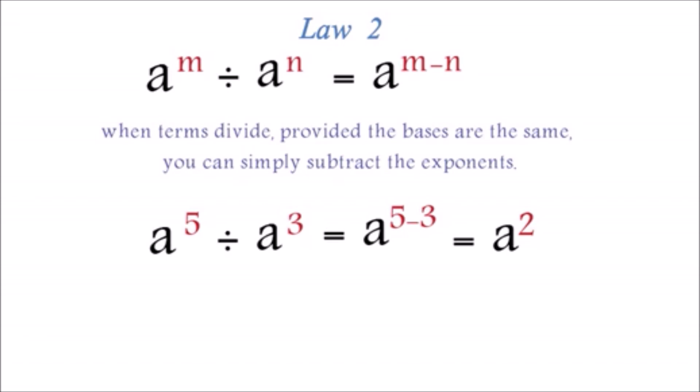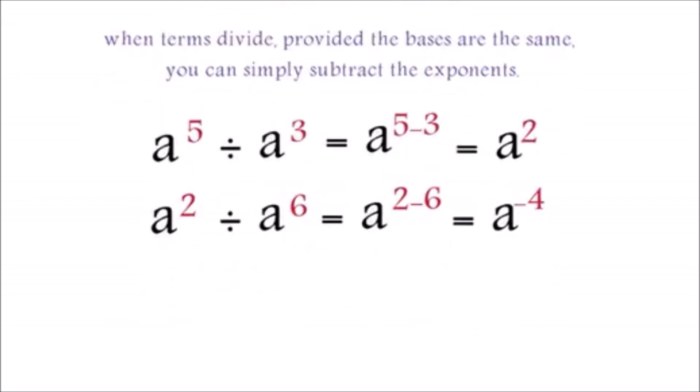Note that it is possible to have negative exponents. Example: a exponent 2 divided by a exponent 6 equals a exponent 2 minus 6. This equals a exponent negative 4. Please take note of this. We will mention it again later.